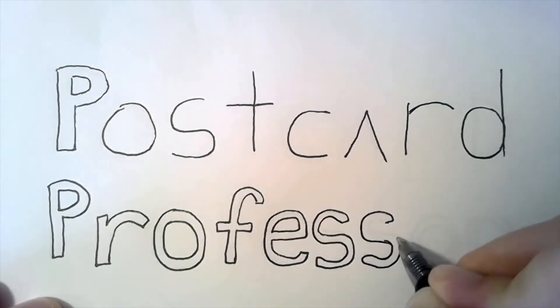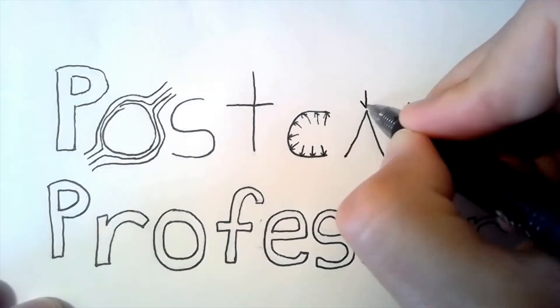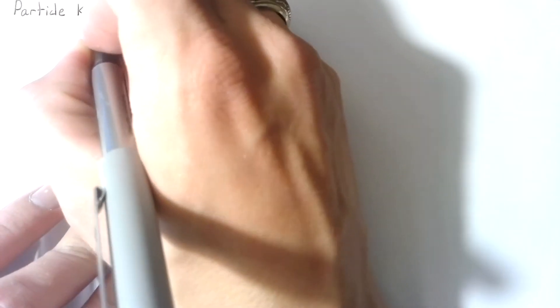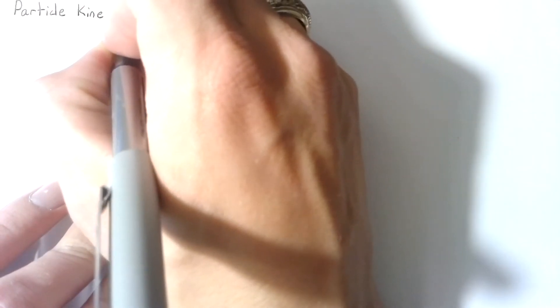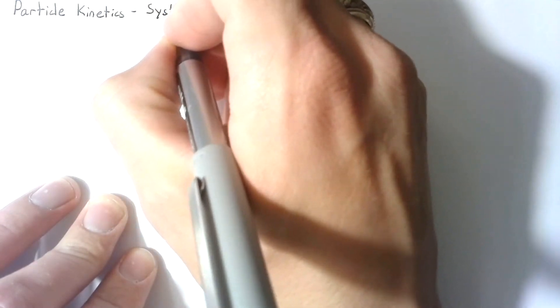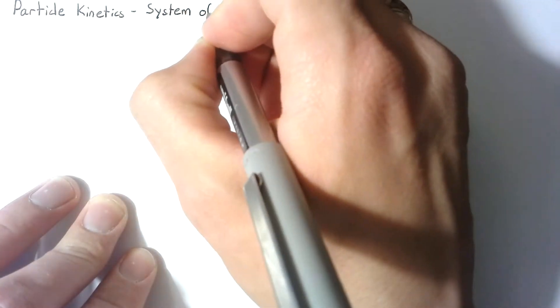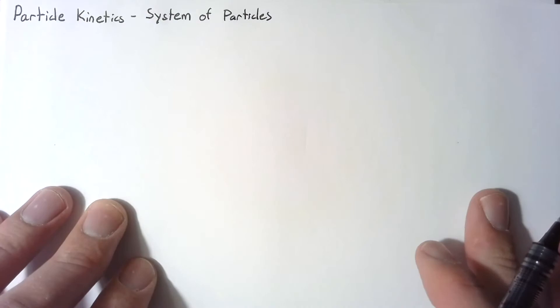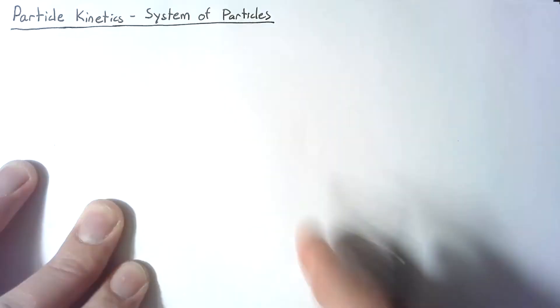Hello and welcome to The Postcard Professor, where we take complex ideas and explain them in the space of a postcard. For this video, we're going to be doing another particle kinetics example. However, instead of looking at a single particle, we're actually going to be looking at a pair of particles, and the more technical term for that is a system of particles.